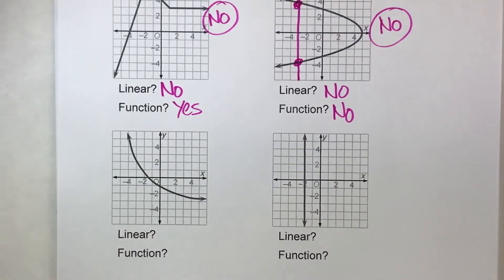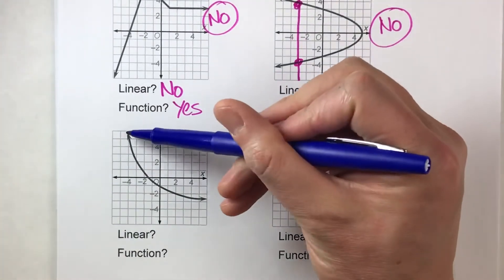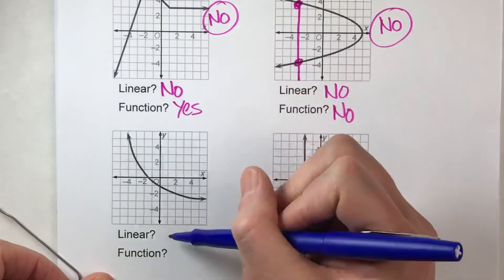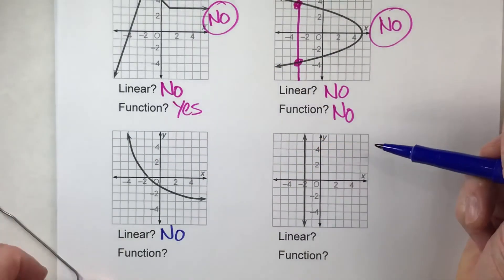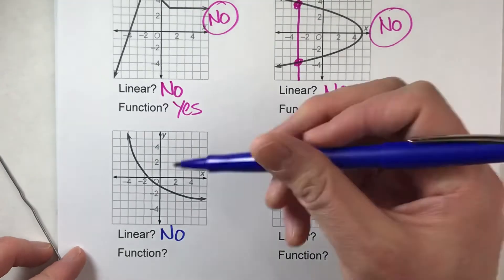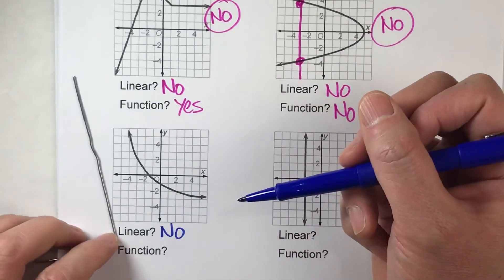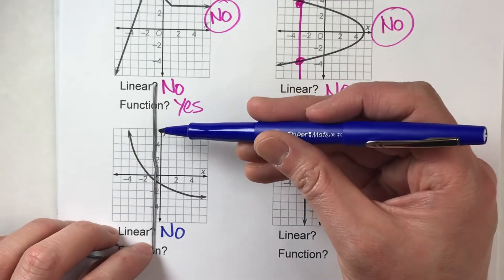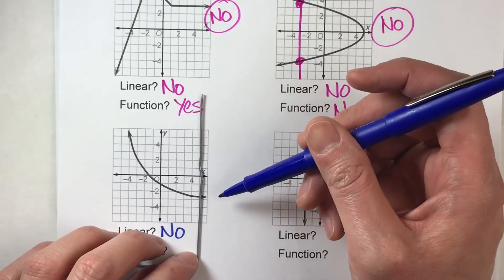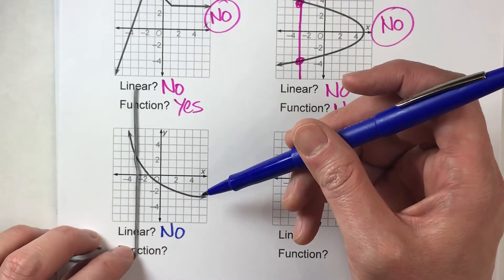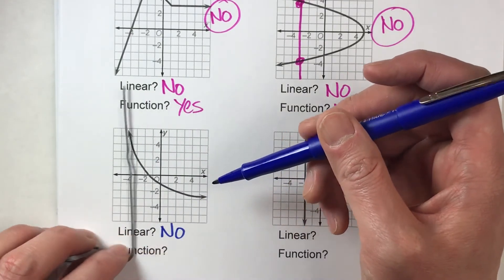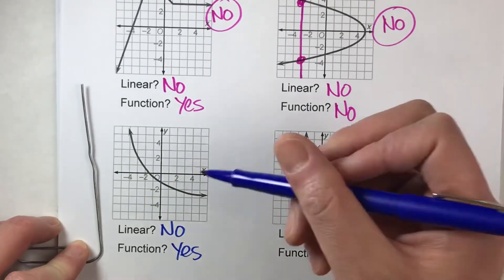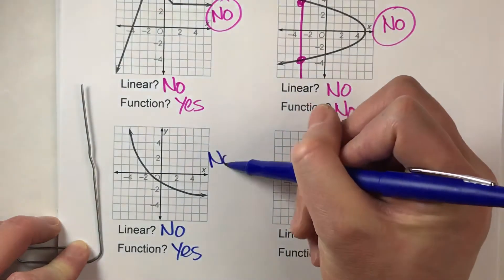For this curve down here: is it linear? Well, it's not a line, so no, it's not linear. Is it a function? If I move this vertical line across the coordinate grid it never touches this line in more than one spot. So it actually does pass the vertical line test — it is a function. But it's not linear, so it is not a linear function.